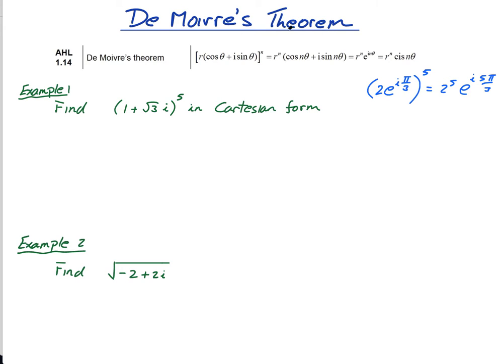However, from what I can gather, De Moivre came up with this before Euler did his thing with his identity and all this stuff. So we used De Moivre's theorem, and we need to know how to prove it by induction.